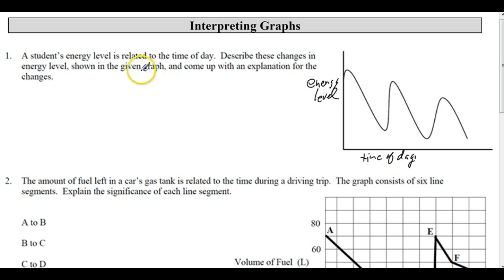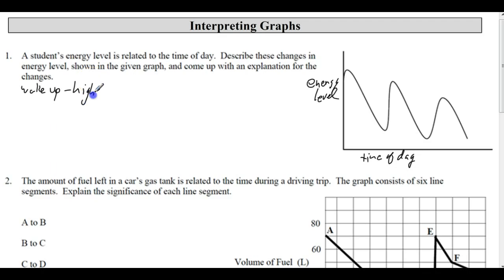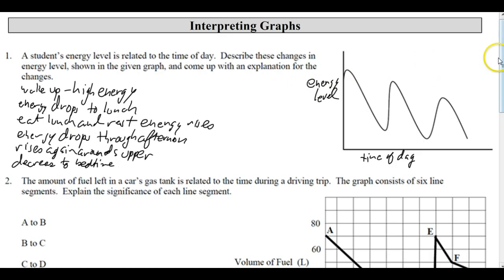We want to come up with a story and describe these changes. Just waking up, energy kind of peaks after you've woken up. Then as you go through the morning, energy level drops. You get a lunch break, have some lunch, and energy level goes back up. It dips again towards the end of school, then climbs — school's over, so energy level climbs back up. We have supper somewhere in there, then it drops off through the evening to low energy and you go to bed. Then you repeat the cycle. So: wake up, high energy — and there's the written explanation to go with that.